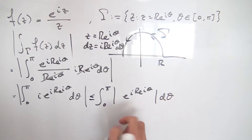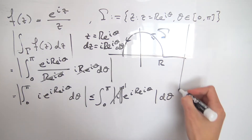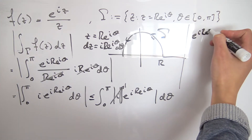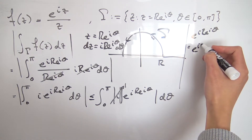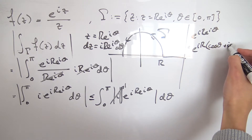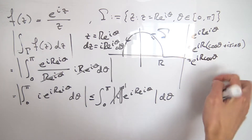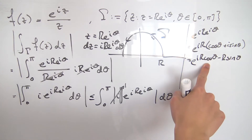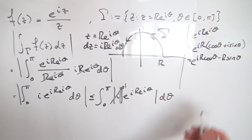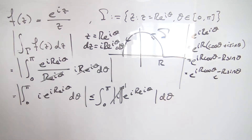We can split the absolute values over the product. The absolute value of i is exactly one. For the exponential term, we apply Euler's formula: e to the i r e to the i theta equals e to the i r times (cosine theta plus i sine theta). Distributing in the exponent gives e to the i r cosine theta times e to the minus r sine theta, since i times i equals negative one.